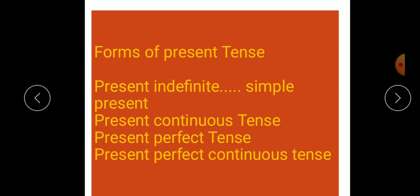Yaani ki har ek tense ki char alag-alag shakli hain ho sakti hain. To iska matlab hua present tense ki bhi char alag shakli hain ho sakti hain. Yeh char alag shakli hain, past tense ki bhi hongi, future tense ki bhi hongi.